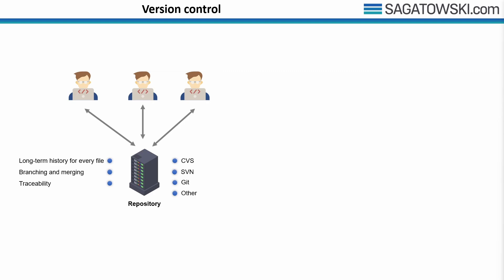If you are using Beckhoff's TwinCAT 3, you don't need to give your hard-earned money to these companies for version control tools. The automation industry is really underdeveloped regarding version control. Most PLC vendors use their own proprietary way to store source code, which results in PLC vendors and third-party suppliers charging big money for something as basic as version control, making the barrier for not doing version control even higher.